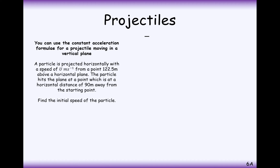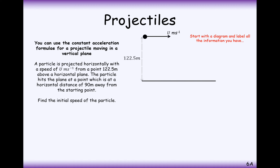Final question: a particle is projected horizontally with a speed of u metres per second from a point 122.5 metres above the horizontal plane. The particle hits the plane at a horizontal distance of 90 metres from the starting point. We need to find u. We'll probably need simultaneous equations — working out the time it hits the floor from the vertical component, then using that time to find u from the horizontal component.